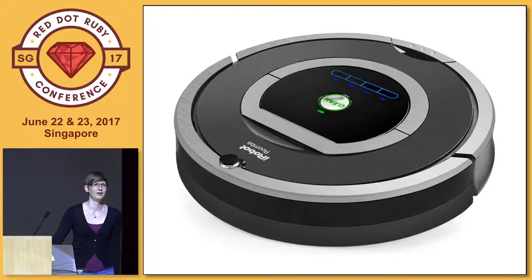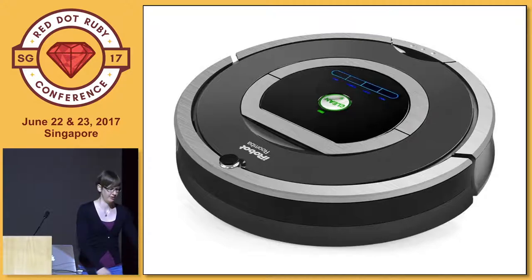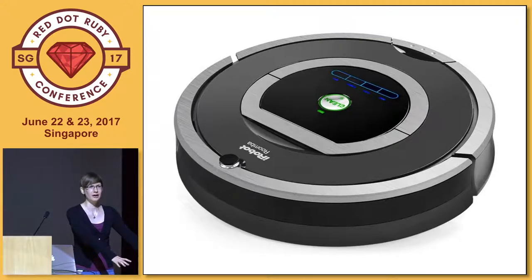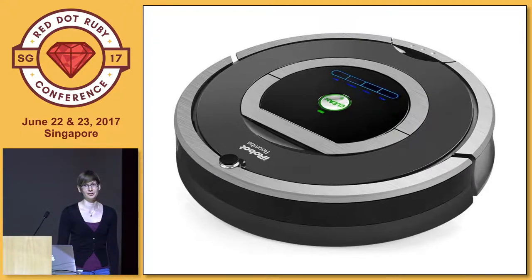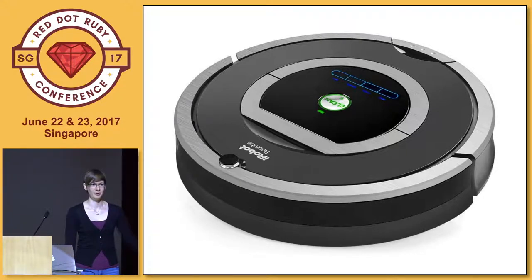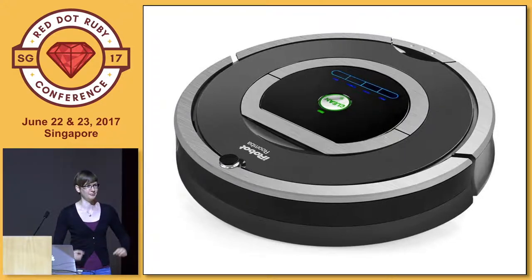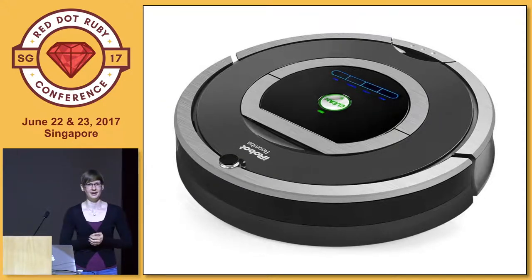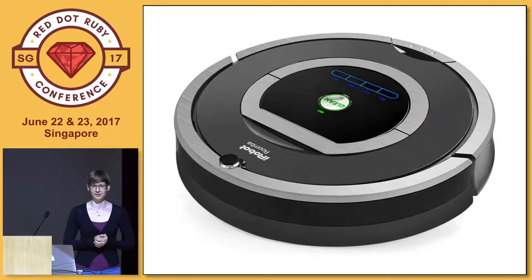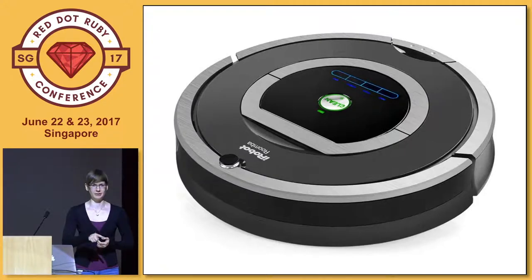I recently got a Roomba from a friend who is moving away from Tokyo. If you don't know what it is, it's kind of like a tiny little vacuum cleaning robot which goes around on your floors and cleans them. So I got it, brought it home, wanted it to clean my floors, put it on the floor, pushed a big clean button, and expected it to clean — but it refused. Instead, it started blinking at me. And I was like, I'm not quite sure what it's trying to tell me. And because I'm a highly sophisticated engineer, I decided to approach this issue with a time-tested and proven best practice method. I pushed a random button to see what it does.